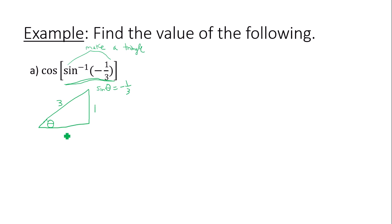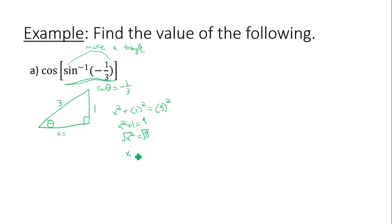We'll call this missing side x. I know that x squared plus one squared equals three squared. I can use the Pythagorean theorem because I'm dealing with right triangles. x squared plus one equals nine, so x squared equals eight. x equals the square root of eight, which breaks up into square root of four times square root of two — that's two square roots of two. So this missing side measure is two square root of two.